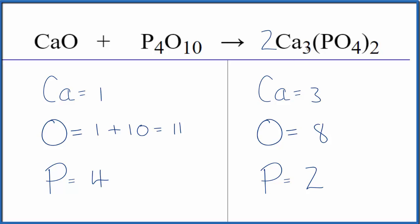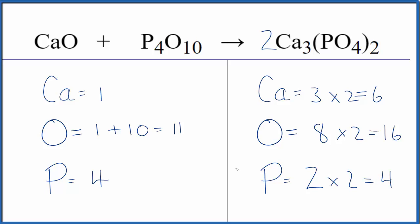Two times three gives me six calcium atoms. For the oxygen, two times four is eight, times two, so we have sixteen oxygens. For phosphorus, two times one is two, times two — that gives us four. So we've balanced the phosphorus atoms.